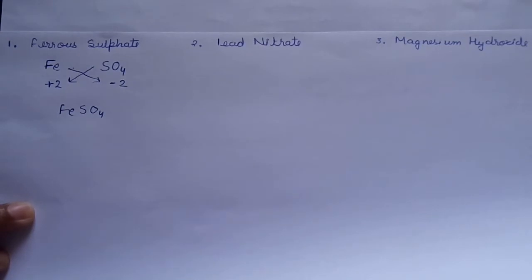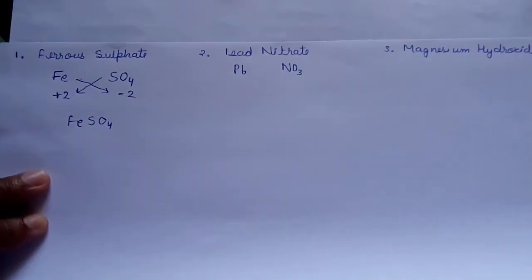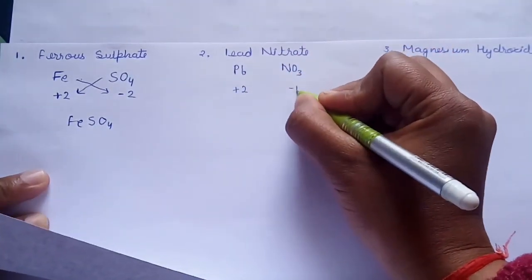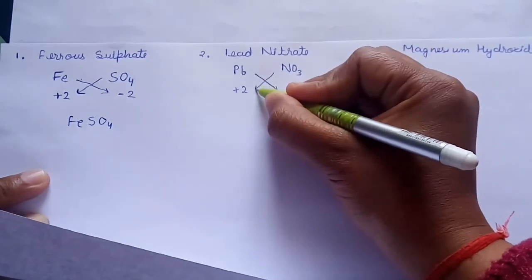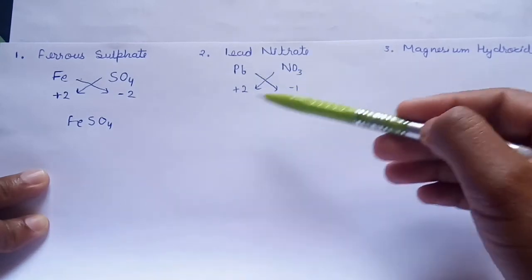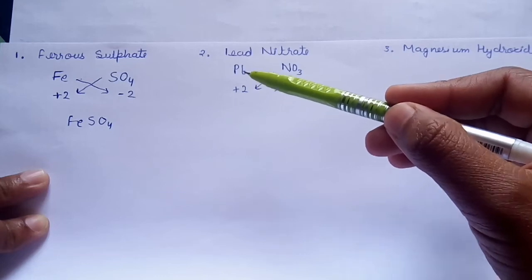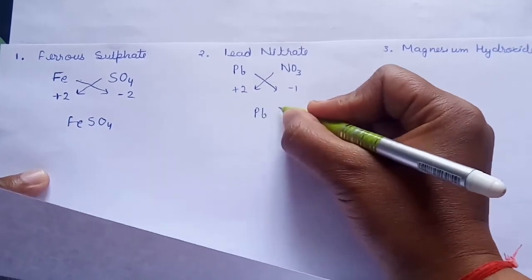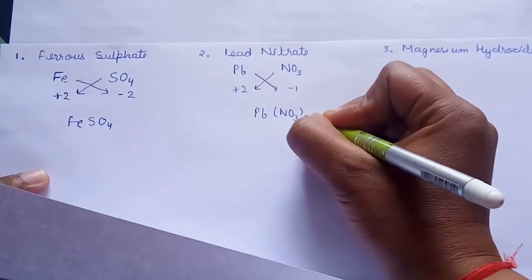Now, moving to the lead nitrate, first we will write the symbol of lead which is Pb and for nitrate we will write the symbol of it which is NO3. Now, we will write the valency for these two compounds. For lead, it is plus 2 and for nitrate it is minus 1. We will exchange their valency. Now, as lead, it will have valency 1, they will exchange valency with each other. Lead will have now 1 and NO3 will have 2. We will write it like Pb and NO3 whole twice.